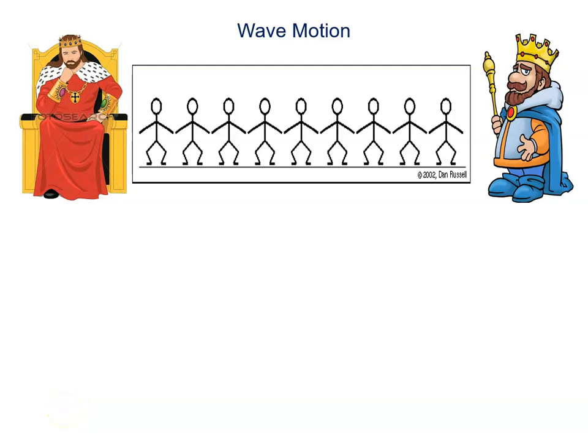We will discuss the definition of wave motion with the help of a story. There was a king at Delhi, but Agra was a friend. He wanted to know how to get information in Delhi.